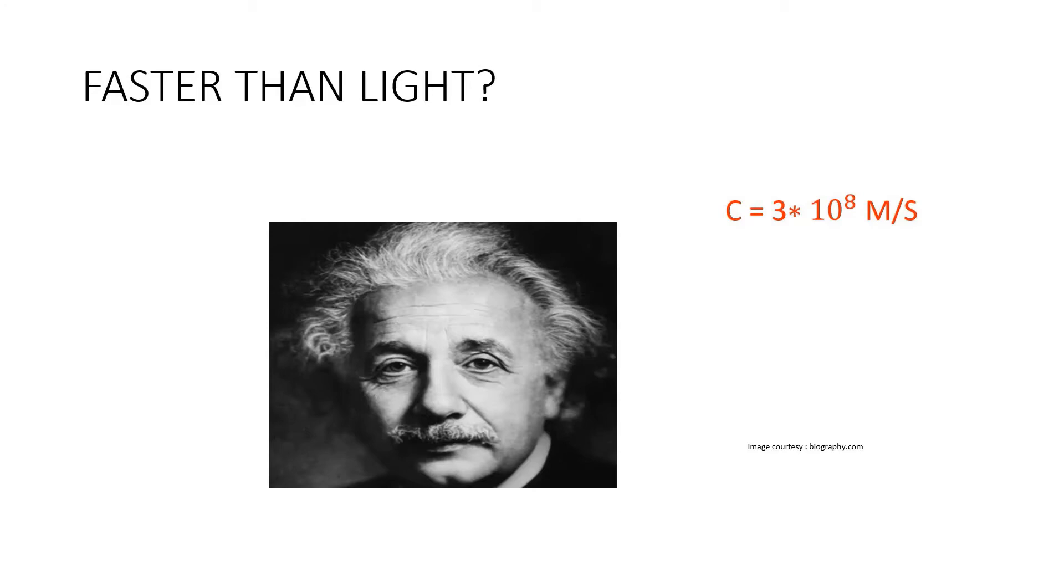When Einstein set forth this theory of relativity, this was his inviolable postulate that there was an ultimate cosmic speed limit and that only massless particles could ever attain it. All massive particles could only approach it, but would never reach it.